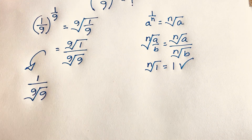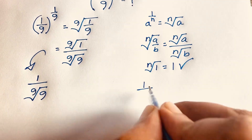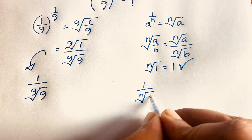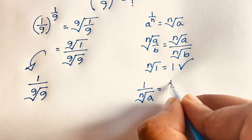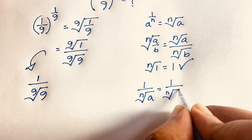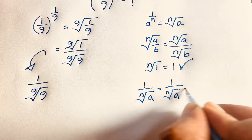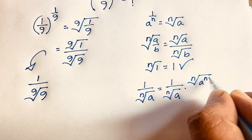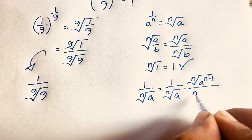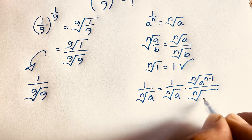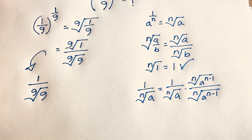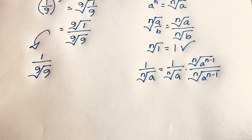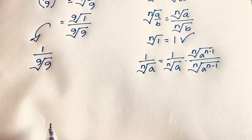Now we know that 1 over the n-th root of a equals 1 over the n-th root of a, times the n-th root of a to the power (n−1), over the n-th root of a to the power (n−1). If I apply these rules to our expression —